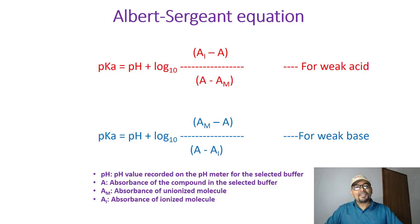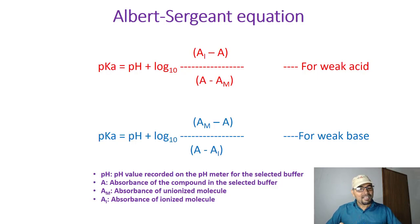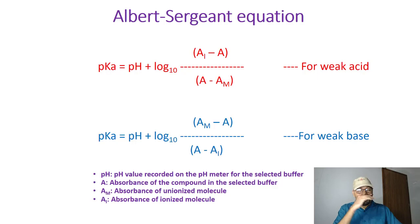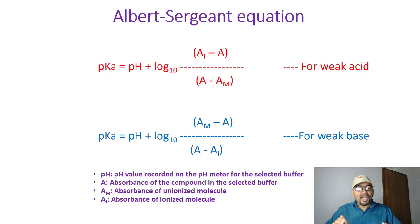pH is the value recorded on the pH meter for the selected buffer. A stands for the absorbance of the compound in the selected buffer. Am stands for the absorbance of the unionized molecule — that is the value obtained from the highly acidic or highly basic extreme solutions. Ai stands for the absorbance of the ionized molecule. This is the equation for measuring the pKa of a weak acidic compound.